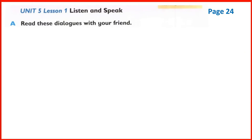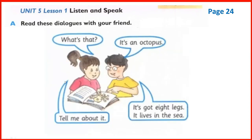Unit 5, Lesson 1 - Listen and Speak. Section A: read these dialogues with your friend. Dear students, you have to practice these dialogues with your friend. If you don't have any friend, you can do practice with your parent. You can see in this picture there are two children - one is a boy and another is a girl. They are talking to each other.